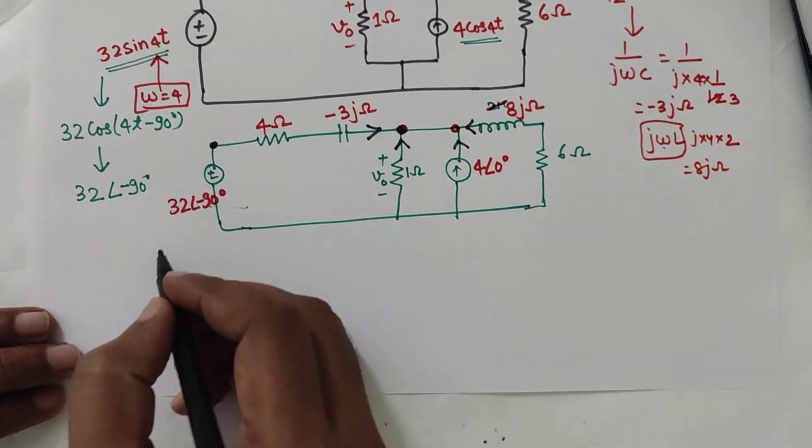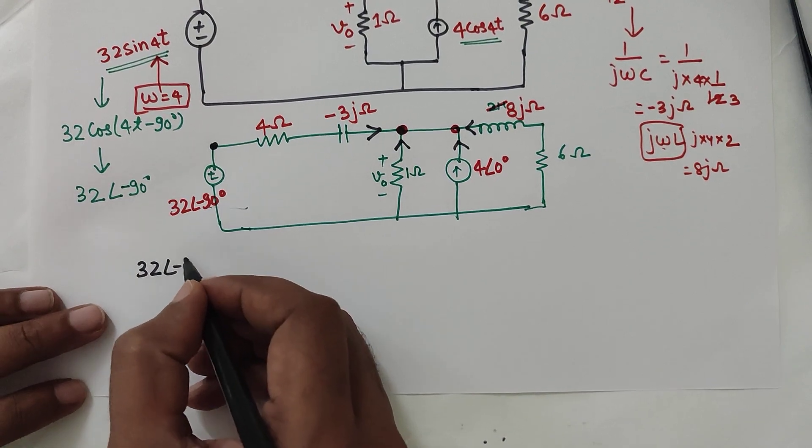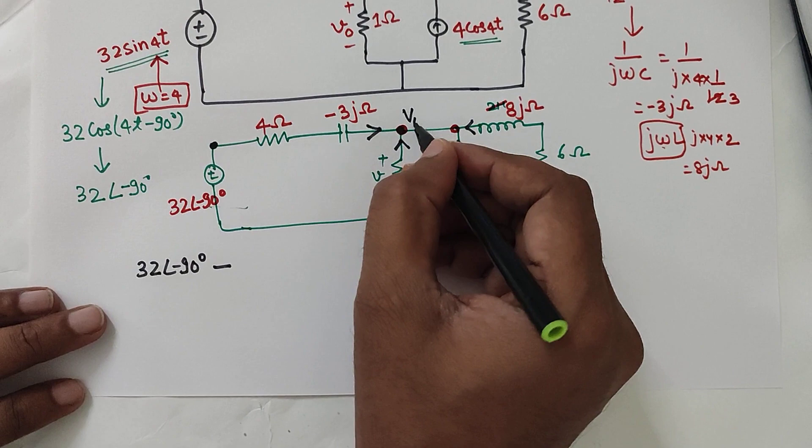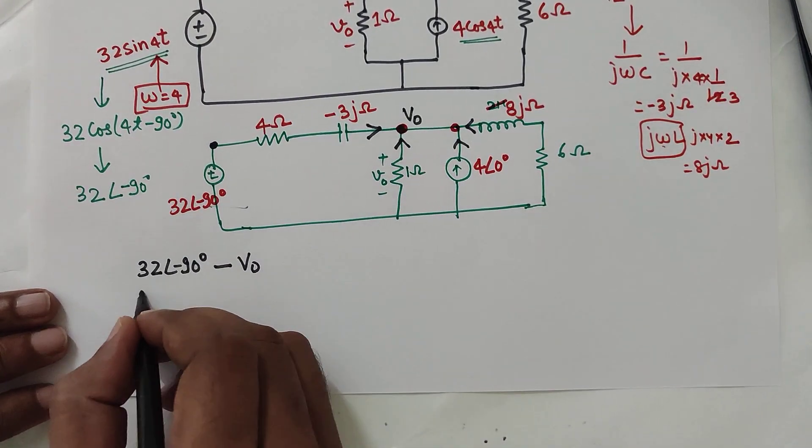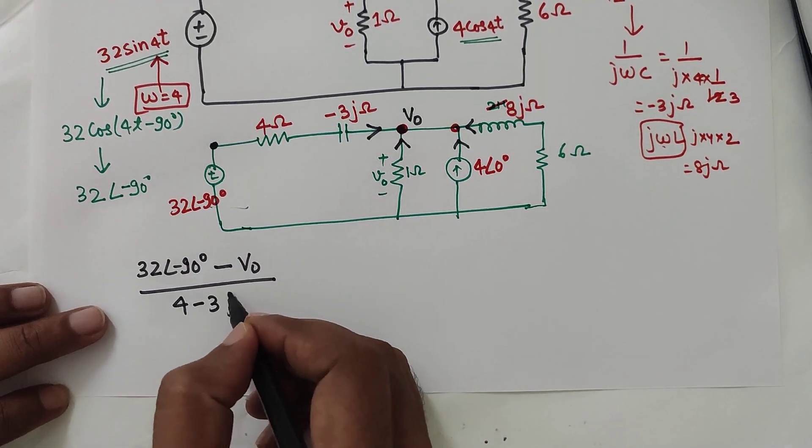Incoming current from here will be, this is at higher potential. So I will take 32 angle minus 90 degrees minus potential here is V0 as given here. So V0 divided by the impedance. Impedance is 4 minus 3j.